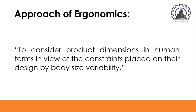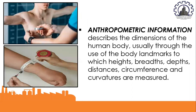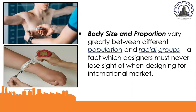The approach of ergonomics is to consider product dimensions in human terms in view of the constraints placed on design by body size variability. For example, a seat should be no higher than the popliteal height of a short user and no deeper than the distance from the buttocks to the knees. Anthropometric information describes dimensions of the human body through body landmarks to which heights, breadths, depths, distances, circumferences, and curvatures are measured. Body size and proportion vary greatly between different populations and racial groups — a fact designers must never lose sight of when designing for an international market.